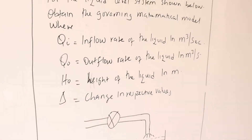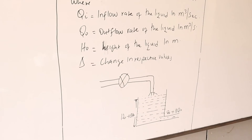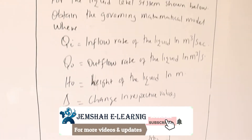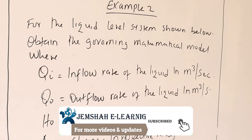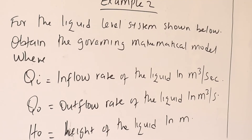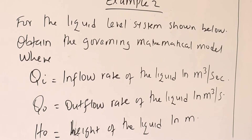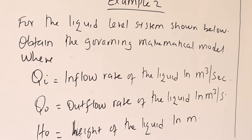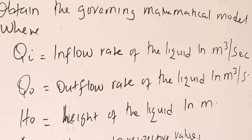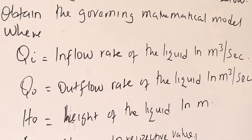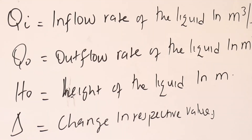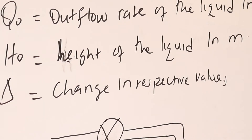Now let's look at the second example. For a liquid level system shown below, obtain the governing mathematical model, where QI is the inflow rate of the liquid in cubic meters per second, QO is the outflow rate in cubic meters per second, H naught is the height of the liquid in meters, and delta denotes the change in respective values.